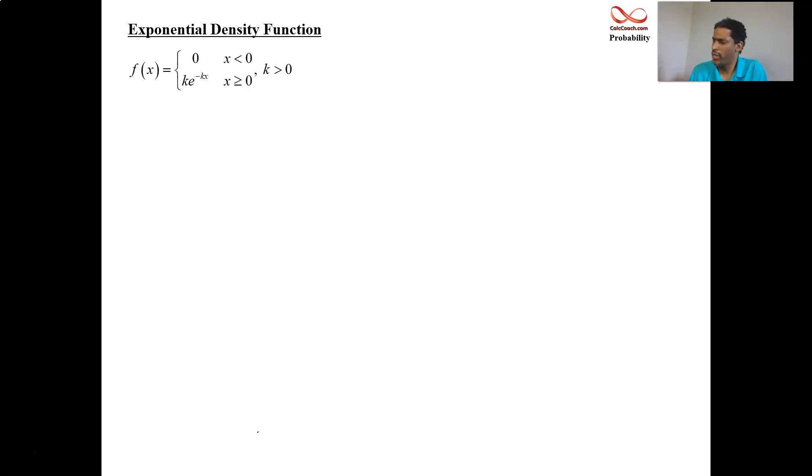In a previous video, we calculated the mean of the exponential density function, and we found out that the mean was the reciprocal of k. So in most of these problems, we'll have the ability to be able to know what the mean is, and by knowing the mean, then we can exactly know the function because these guys are reciprocals of each other. The only thing you need is k, and now we know that k is the reciprocal of the mean.